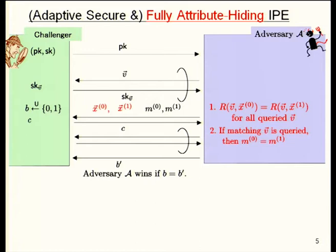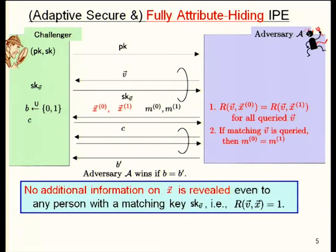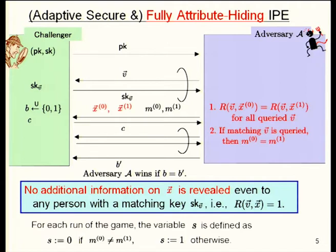So the challenge messages should be equal for a matching key case. But from this stronger security notion, any additional information about the attribute is not revealed to any person, even to a matching key holder. For our security proof, we define an auxiliary parameter S: S equals 0 if the challenge messages are equal, and otherwise S is 1.